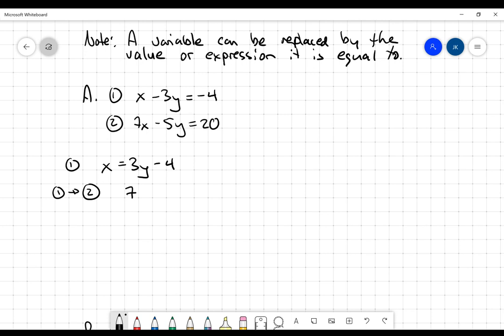Equation two is seven multiplied by x. Well, now I know that x is exactly the same as 3y minus 4. So I can make that substitution. The big mistake here is often people do not distribute the 7 through. They multiply it by the 3, but they don't distribute it to the negative 4. So 21y minus 28 minus 5y is equal to 20.